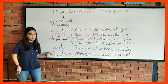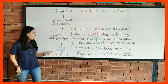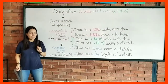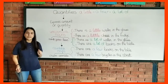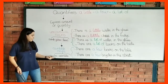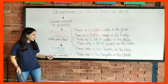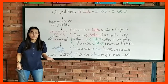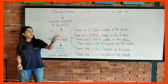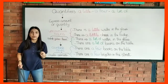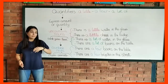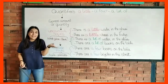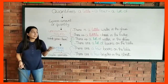The countable nouns are the ones that we do count. For example, chairs, animals, even people. We can say there are two kids in the park. You see? I can count the kids.